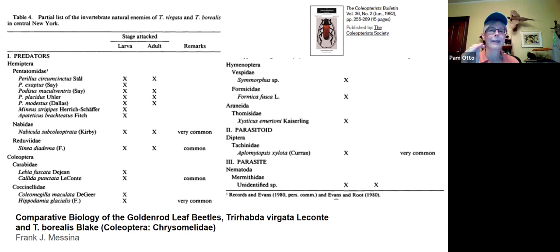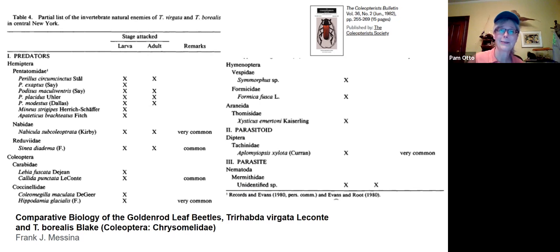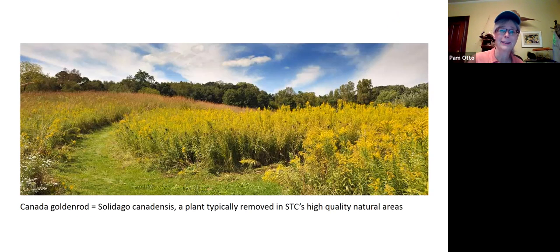Triiroda is the genus name, and the larvae are really hard to distinguish by looking at them — in fact they say it's impossible to tell them apart visually. But you can tell what species you're looking at by the plant you find them on. When you've got fields of goldenrod like this, you're going to have a lot of beetles out there too.